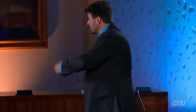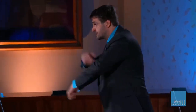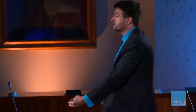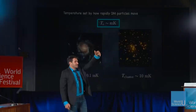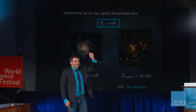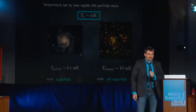Galaxy clusters are much more massive, so a dark matter particle in a galaxy cluster is moving much faster because there's more gravity. You work out what the temperature would be for dark matter particles: it's 10 millikelvin — above the critical temperature. So in galaxy clusters, you're not in the superfluid state. You're in the ordinary dark matter phase. That's what distinguishes galaxies from galaxy clusters.